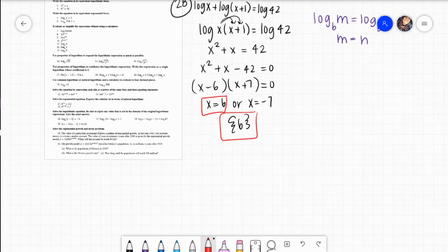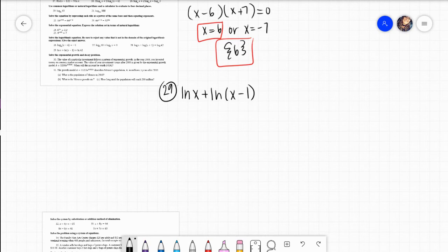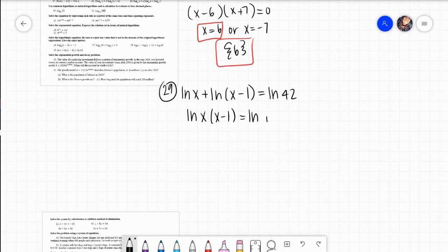So I should have enough room to do 29. 29 is natural log of X plus natural log of X minus 1 equals to natural log of 42. Yes, exact same problem. The only difference is that negative sign right there. So we want to go ahead and condense this into one natural log. We would have natural log of X times X minus 1 equals natural log of 42. They're both in natural log form. They're both expressed with a natural log. So I'm actually just going to go ahead and set my M equal to my N. And I'm going to go ahead and distribute. I get X squared negative X equals 42.